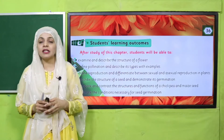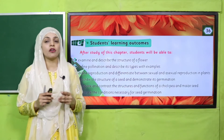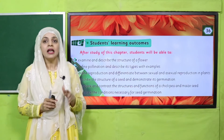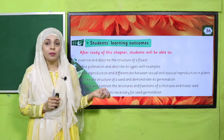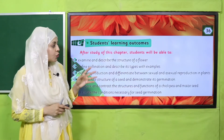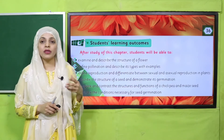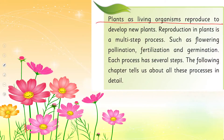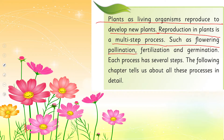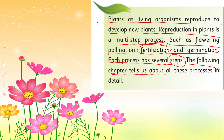On page number 36, all the student learning outcomes are given, which are for the parents and the teachers to understand that by the end of this chapter the students will be able to deliver, understand, and explain all these points. One by one we will discuss them. Plants as living organisms reproduce to develop new plants. Reproduction in plants is a multi-step process such as flowering, pollination, fertilization, and germination. Each process has several steps, and the following chapter tells us about all these processes in detail.